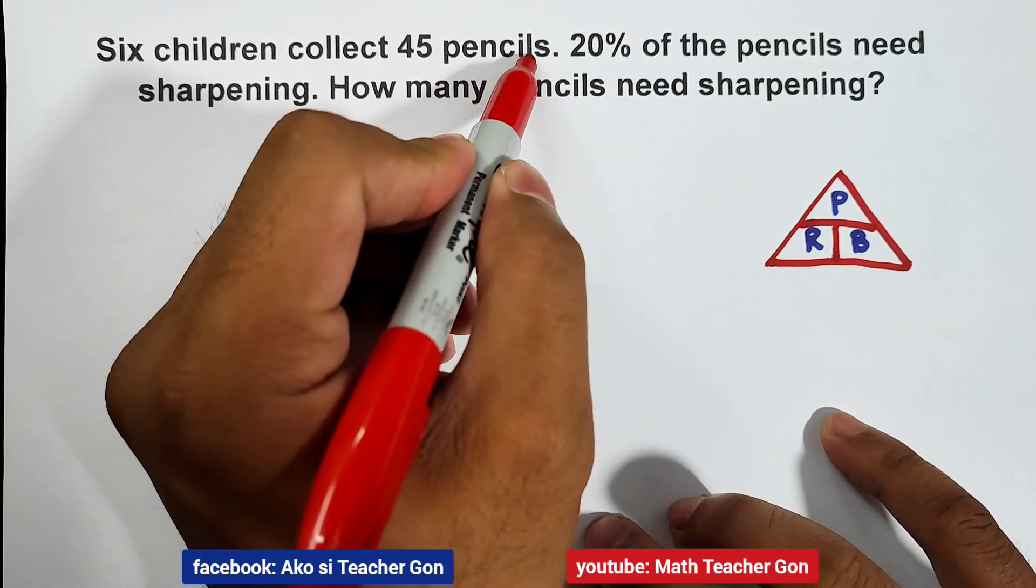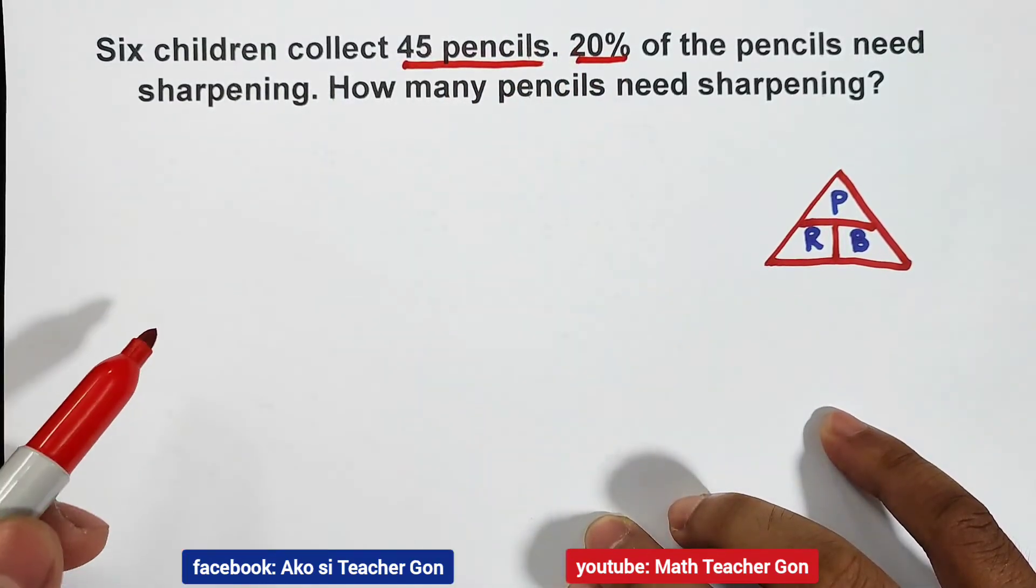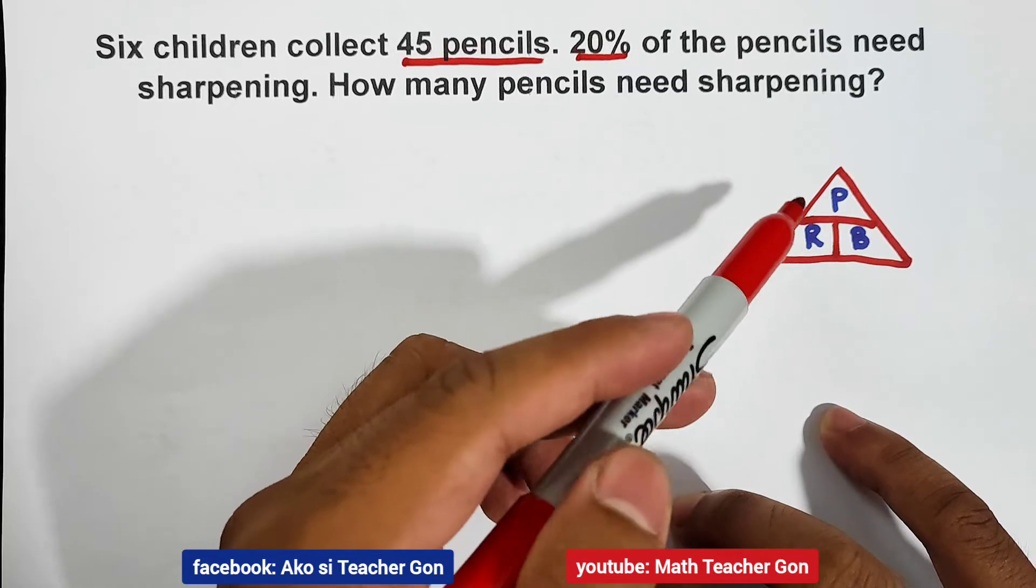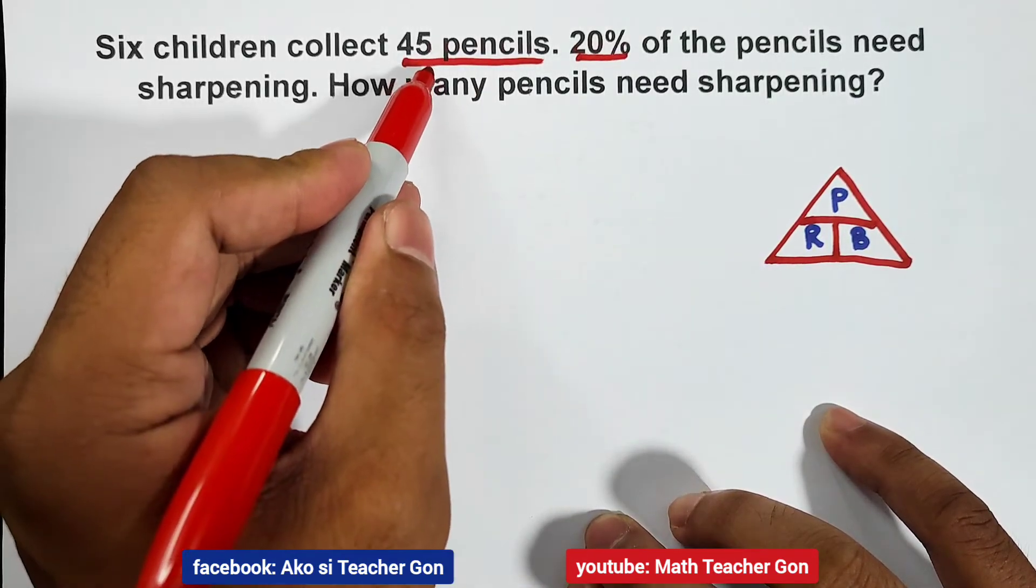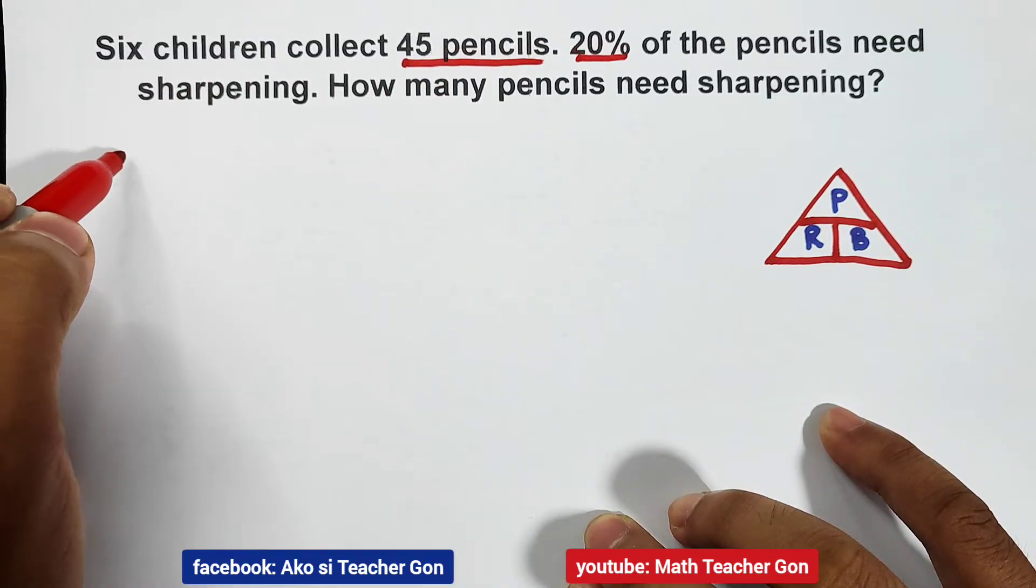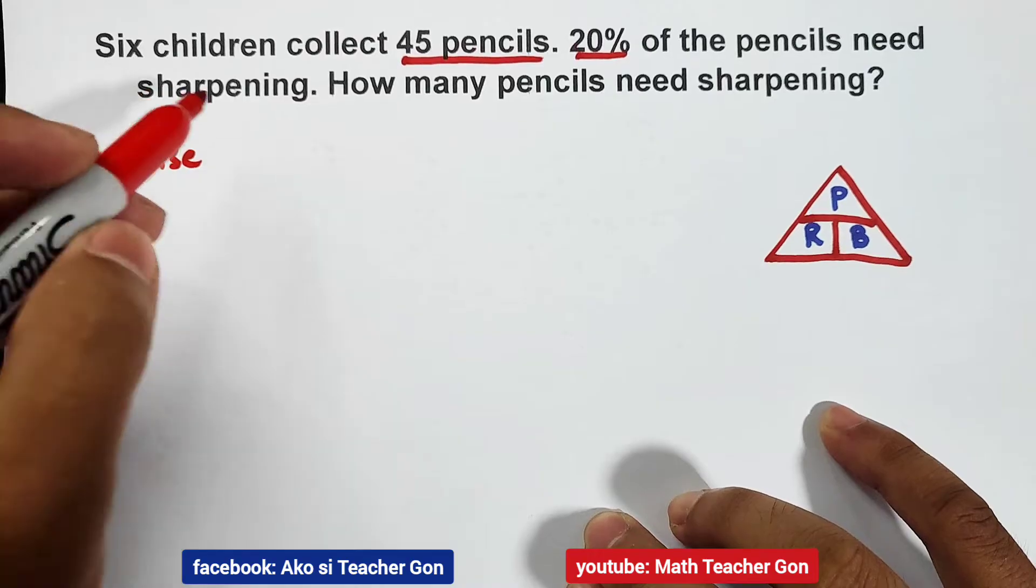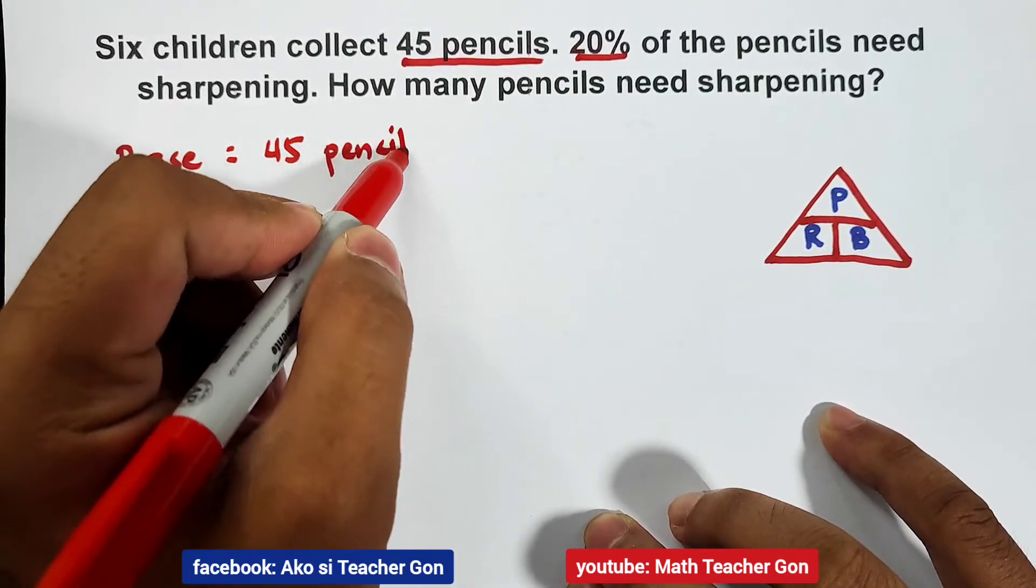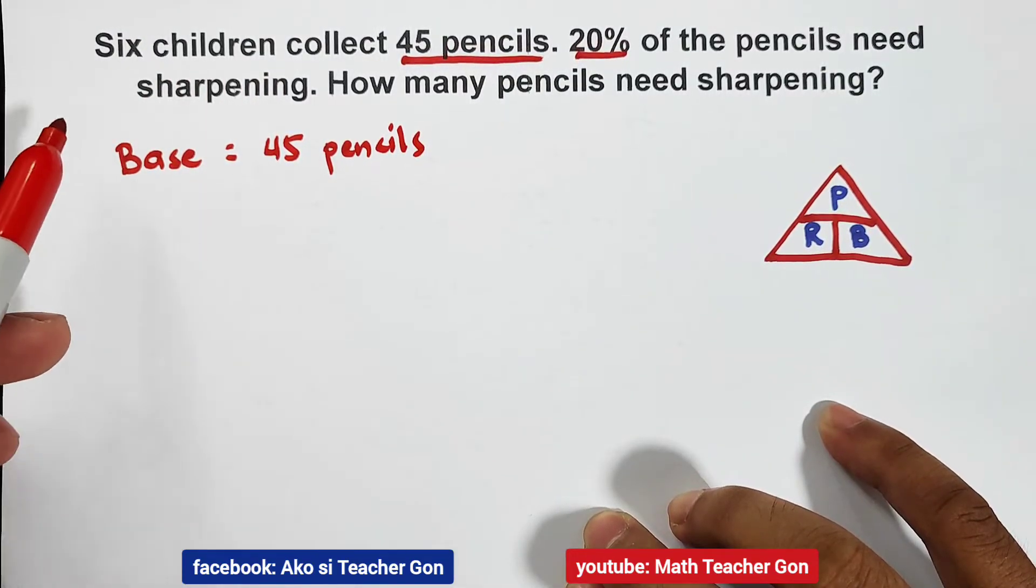Here are the important details that we have: the 45 pencils and the 20%. Among the three variables that we have here - percentage, rate, and base - which do they represent? First, the 45 pencils. That stands for the base. Your base is equal to 45 pencils, because that's the total number of pencils collected by the six children.